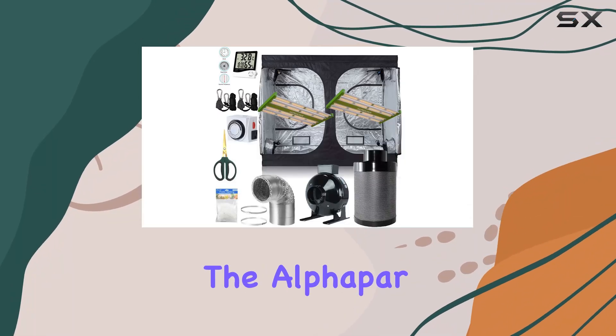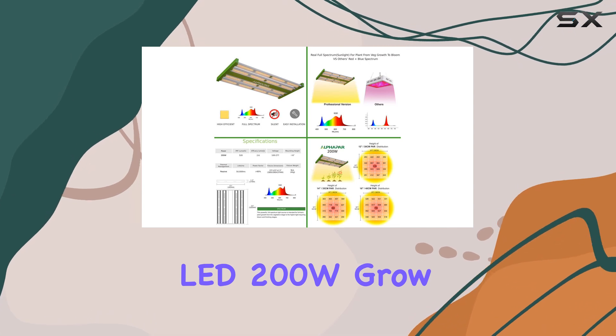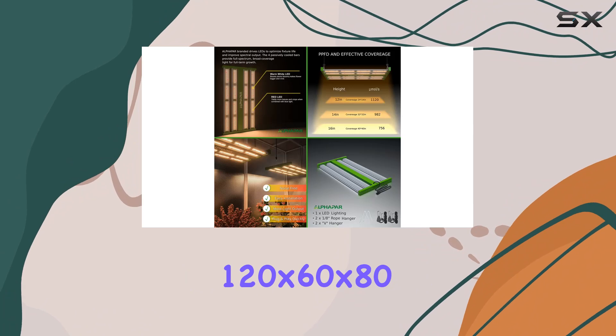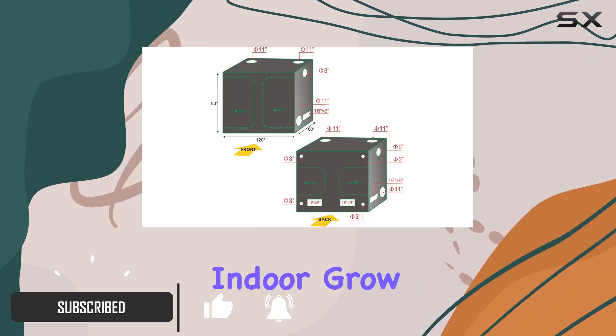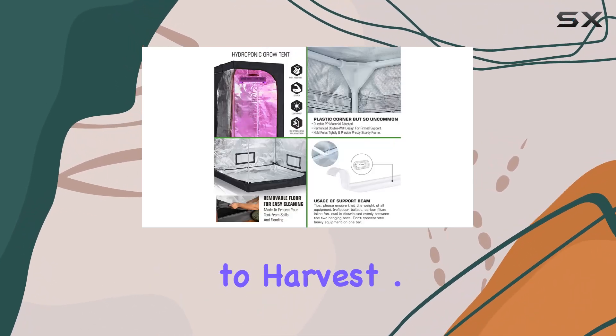Today, we're diving into the Alphapar New Tech Sunlight Full Spectrum LED 200W Grow Light Fixture Kit paired with their spacious 120x60x80 Mylar Grow Tent. This comprehensive indoor grow setup promises efficiency and ease for cultivating your plants from seedling to harvest.